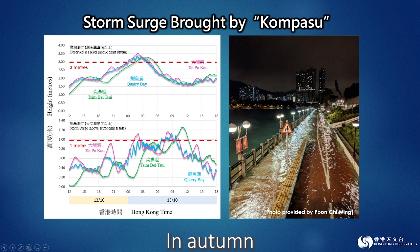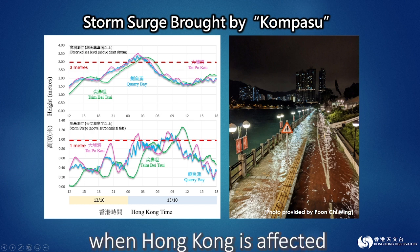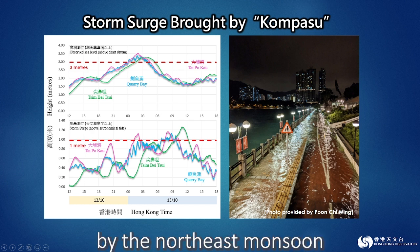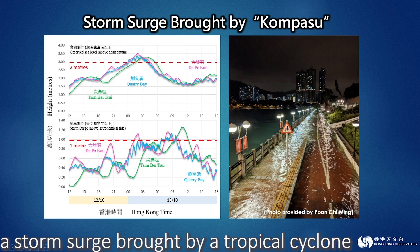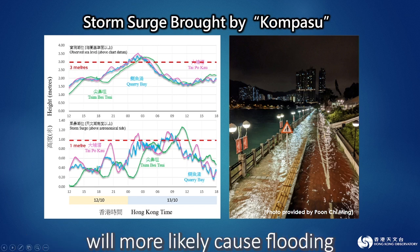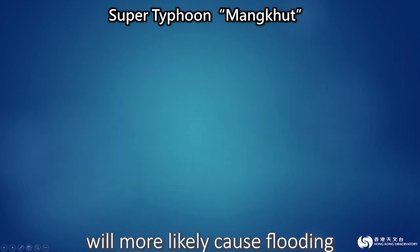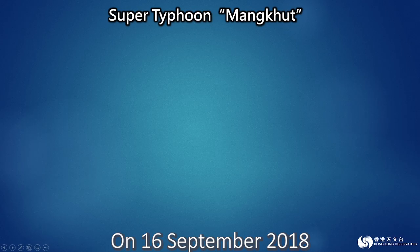The storm surge also caused flooding in the Shing Mun River in Shatin and other districts. In autumn, when Hong Kong is affected by the northeast monsoon, especially on days of high astronomical tides, a storm surge brought by a tropical cyclone will more likely cause flooding.